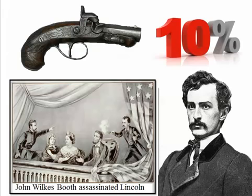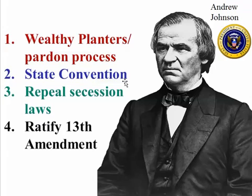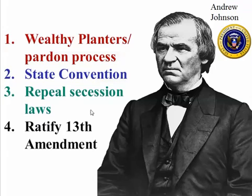When Lincoln was assassinated by John Wilkes Booth, the Vice President became president — Andrew Johnson. By May of 1865, one month later, Johnson came up with a Reconstruction plan. In it, wealthy planters had to go through the pardon process with the president and beg him for forgiveness. States had to set up conventions, elect delegates, and those delegates had to repeal secession laws, repudiate all Confederate debts, and ratify the 13th Amendment. A little bit more than what Lincoln had planned in 1863.